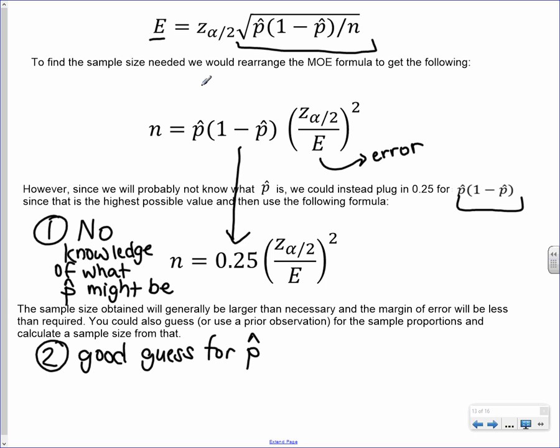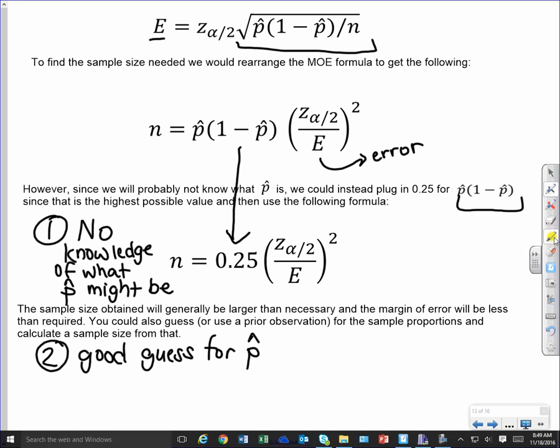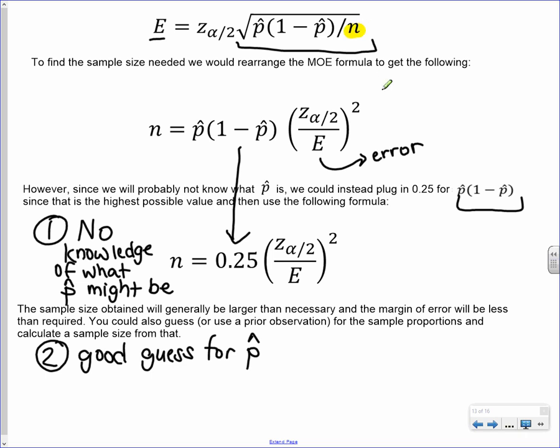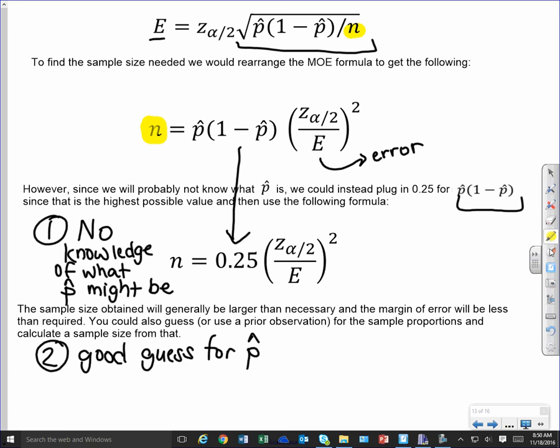Now, if we wanted to find out what's the sample size that we need. So before we do our survey, we want to know how big of a sample do I need to take? We can rewrite this formula and solve for n. And so that's what we did here. This is our formula rewritten for the variable n. So when I do that, it says I can figure out what sample size I need by doing p-hat times 1 minus p-hat times the Z alpha half over the error squared. Now, remember, this is before we go and take our sample.